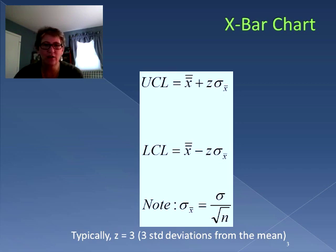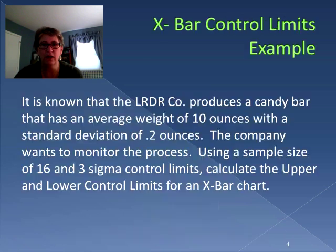Now when we do the standard deviation, we're actually using the standard error, which is the sampling distribution of the mean standard deviation, and that's calculated by taking the population standard deviation and dividing it by the square root of the sample size. So let's do an example.